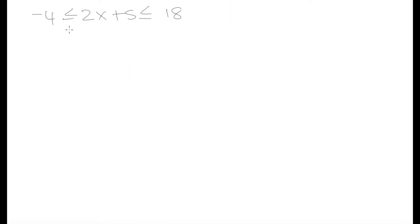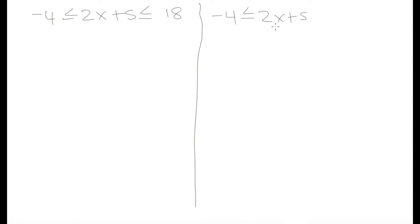Let's go over one last example. In this example, we can solve it the same method we went over previously, or we can solve it another way. The other way is to think of this as: negative 4 is less than or equal to 2x plus 5, and 2x plus 5 is less than or equal to 18. Both of these are actually the same thing — we can think of it as one large compound inequality with two signs, or break it into its parts and solve each separately. Both will get us the right answer.